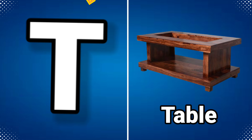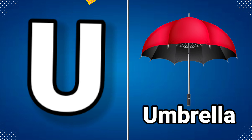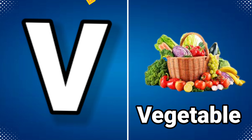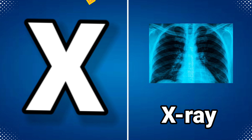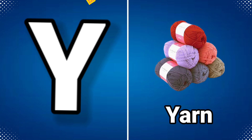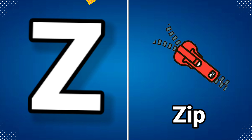T for table, U for umbrella, V for vegetable, W for watch, X for x-ray, Y for yarn, Z for jeep.